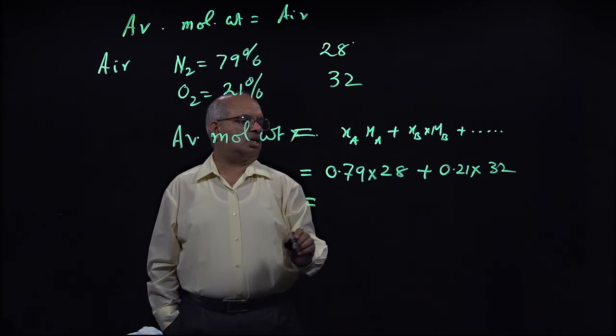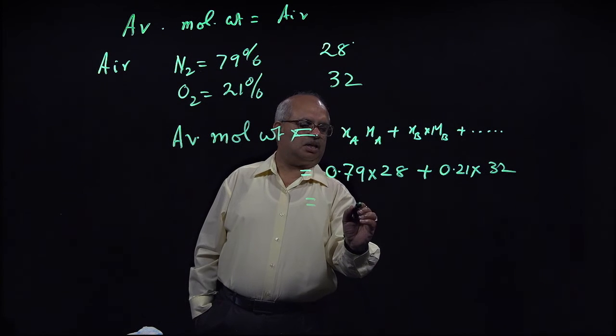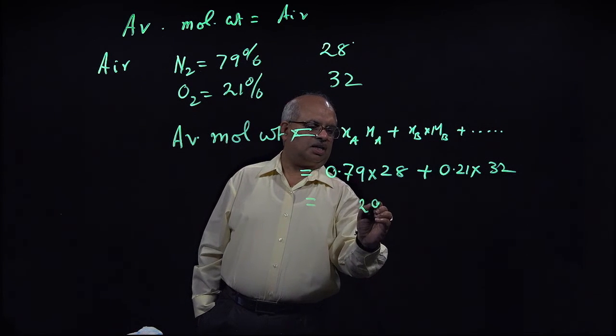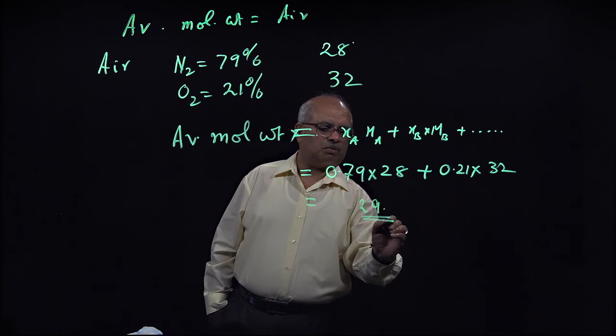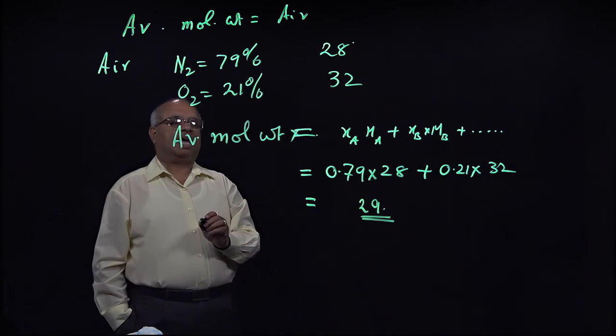Which basically comes out to be roughly 29. So average molecular weight is 29 for air.